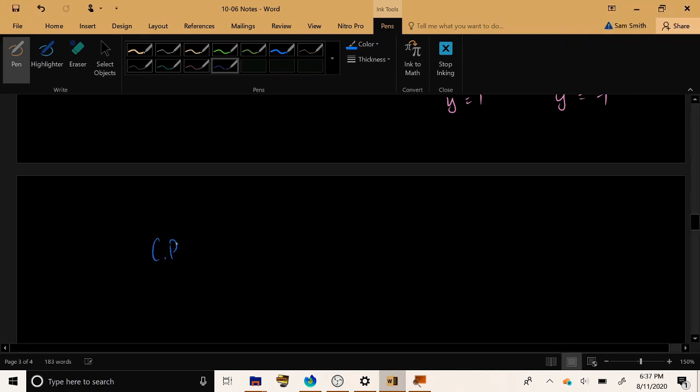So we have three critical points at the moment. We have the point (0, 0). We have the point (1, 1). And we have the point (-1, -1).